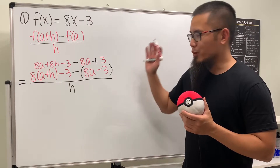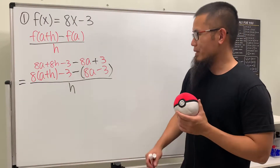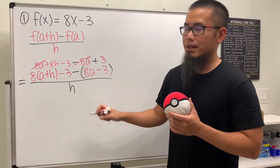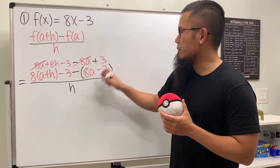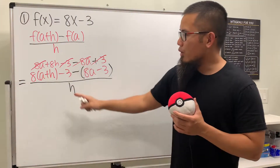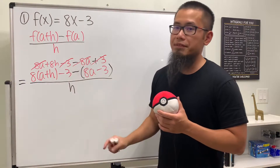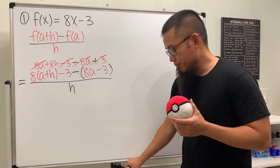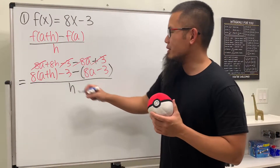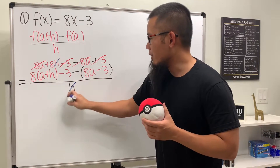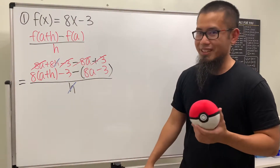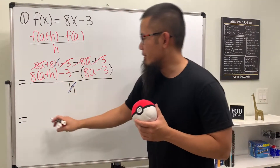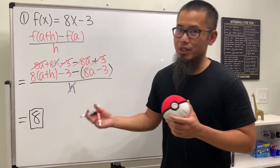Now here's the most satisfying part — the cancellation. 8a and -8a cancel each other. -3 and +3 cancel each other. On the top we just have 8h left, and since we have h on the bottom, we cancel it. The answer is simply 8.